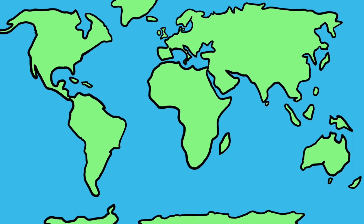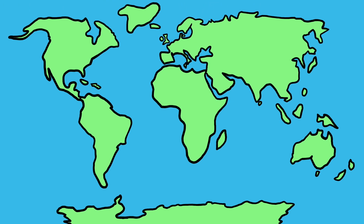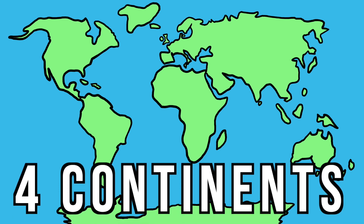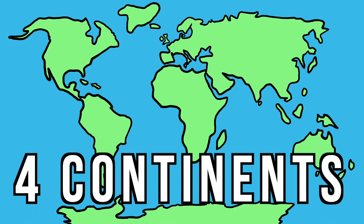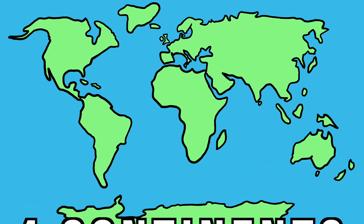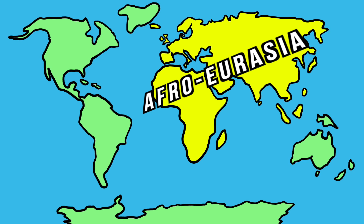So let's say that you want to divide up the existing continents. There are a number of different ways to do that. There's the four continent model, which has one giant Afro-Eurasia, consisting of Africa, Europe, and Asia combined into one huge continent.